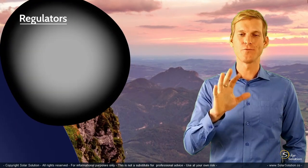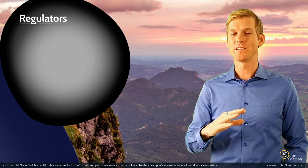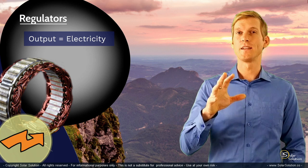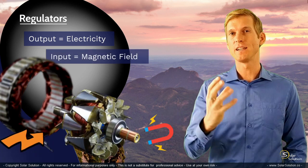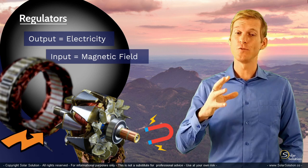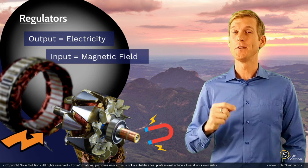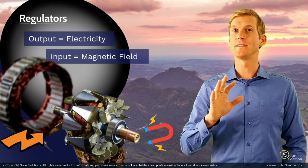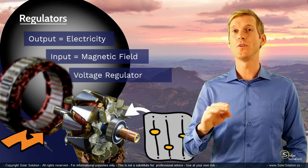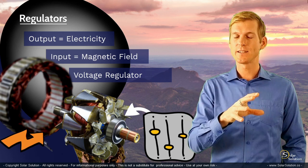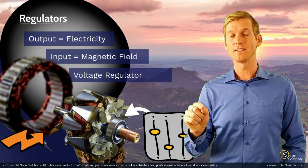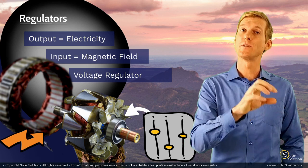Let's explain the functioning of a regulator by starting at the end of the process. We want the stator to provide us with electricity — that's the output of the whole process. The input is the magnetic field that rotates inside of the stator. So it makes sense that if we regulate the magnetic field inside of the rotor, we can adjust the output voltage from the stator. That's exactly what the regulator does — it controls the magnetic field of the rotor rotating inside of the stationary stator, and therefore it's called the voltage regulator.